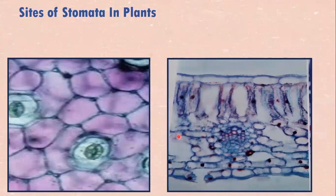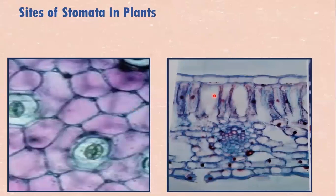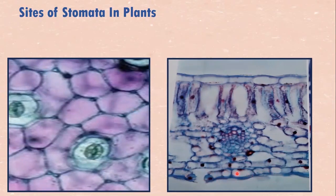These are stomata. This is a section of epidermis, and this is a stoma. This is another stoma — these are other epidermal cells. This is a vertical section of the leaf. This is a stoma here, on the lower surface of the epidermis — so this is the lower epidermis, that's where the stoma is.